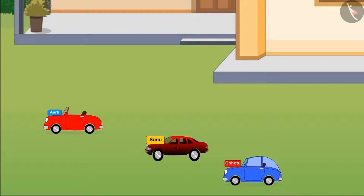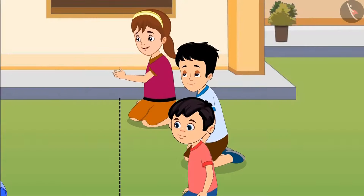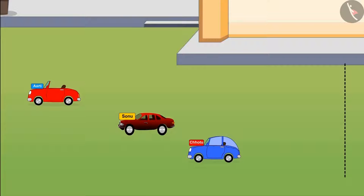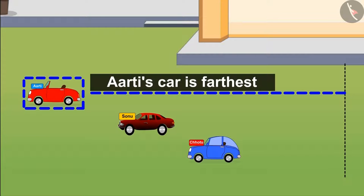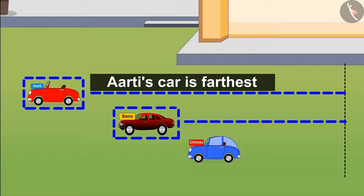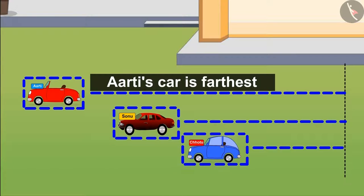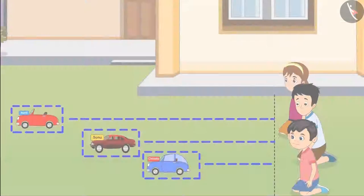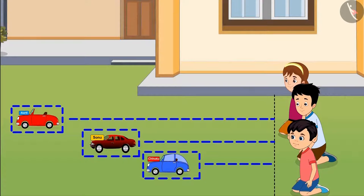After some time all three cars stopped. Let us see which car has stopped at the farthest point and which car has stopped at the nearest distance. 'I won! I won! Oh, my car is the farthest from here! Sonu's car is behind my car, and Chotu, your car is nearest to us!' So children, Aarti's car went the farthest and Chotu's car the nearest.